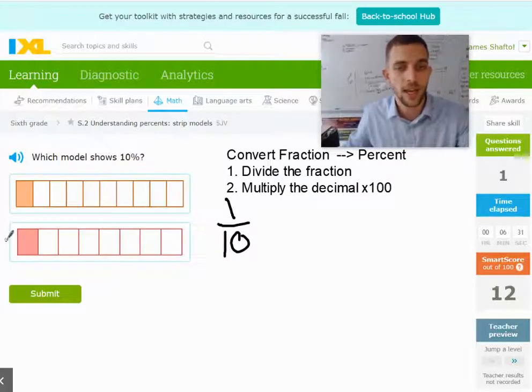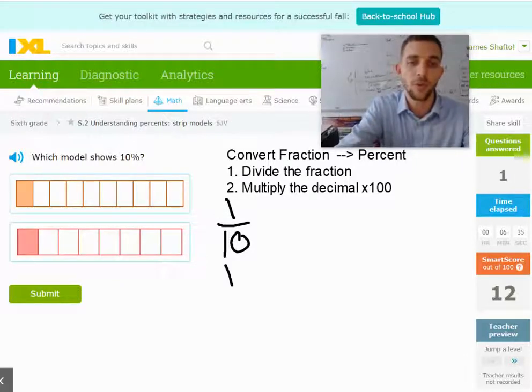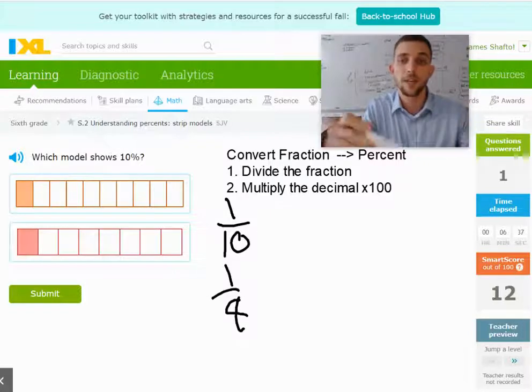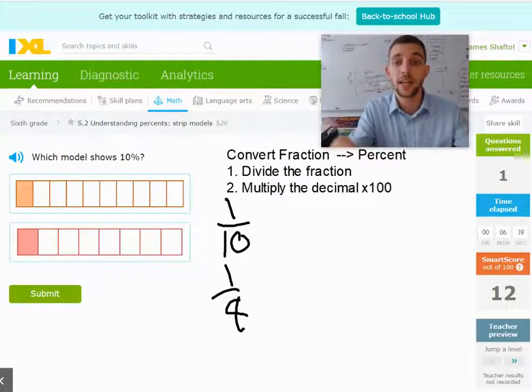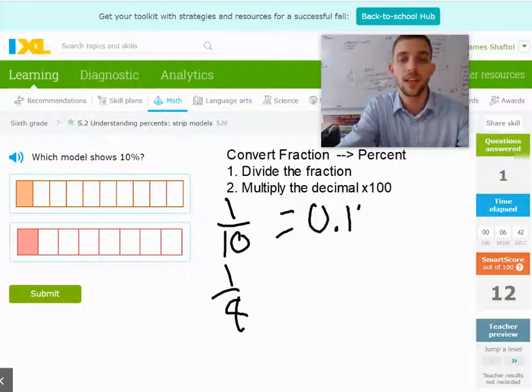And then over here, I have 1, 2, 3, 4, 5, 6, 7, 8. So this is going to be 1 eighth. And if we divide 1 divided by 10, we get 0.10.